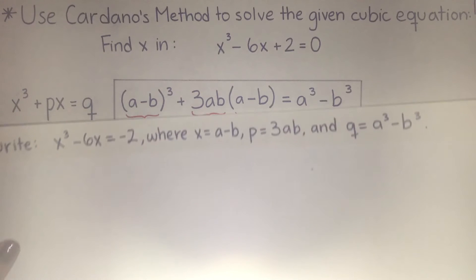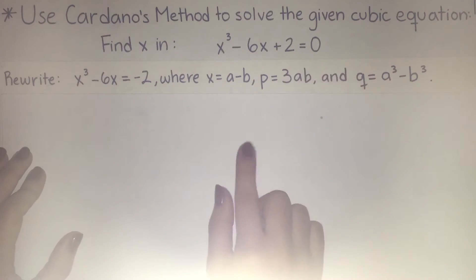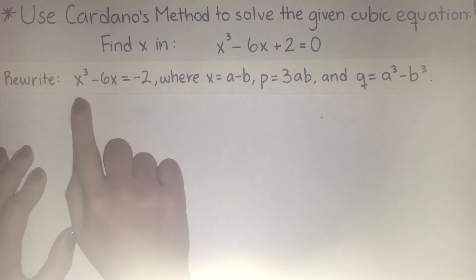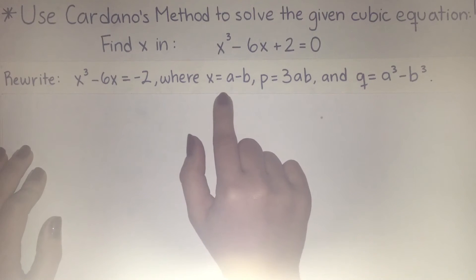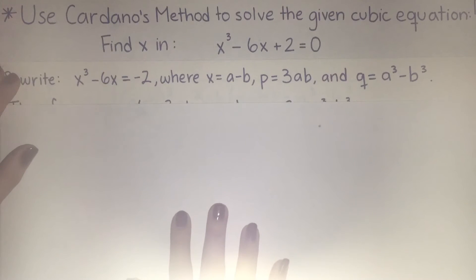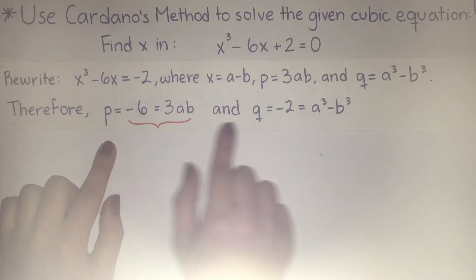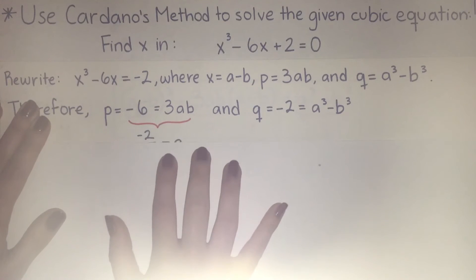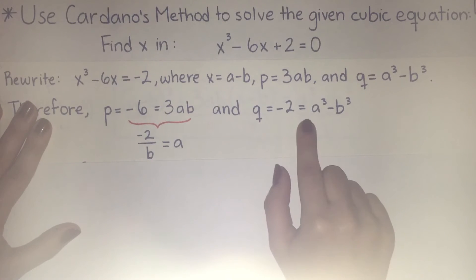The next step is to rewrite our given equation. So x cubed minus 6x plus 2 equals 0 must be in Cardano's equation form. We subtract 2 from each side to get x cubed minus 6x equals negative 2, where x equals a minus b, p equals 3ab, and q equals a cubed minus b cubed. Using these coefficients, we see that p equals negative 6, which equals 3ab, and q equals negative 2, which equals a cubed minus b cubed.